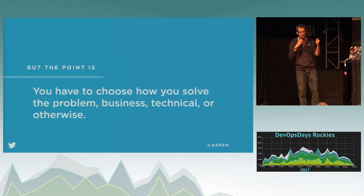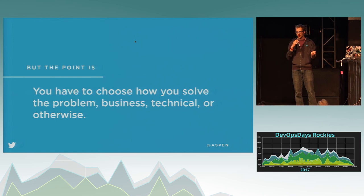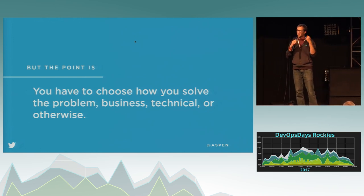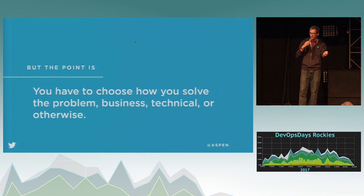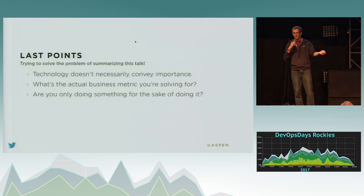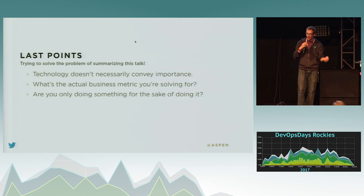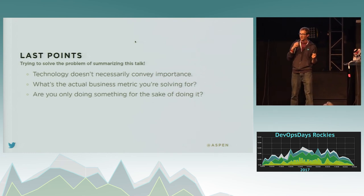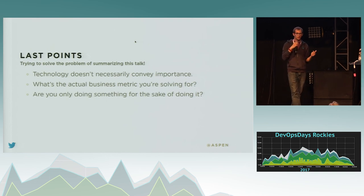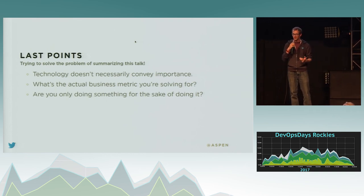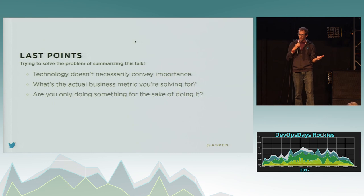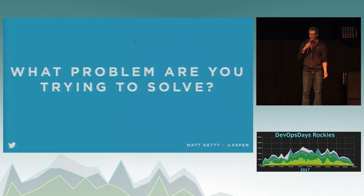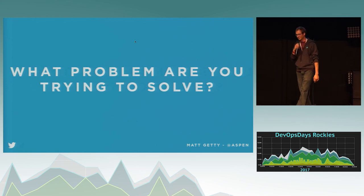Technical problems are really cool, but we're all too good at building technical problems out of something that is actually a business problem. I see this all the time — we have to do this because we think we have to, or because such and such wants to. Technology doesn't convey importance; it's an overhead to what you're actually trying to do. Introduce code only when it solves a customer problem. Don't do things for the sake of doing it. And always feel free to ask: what problem are you trying to solve? Thanks.